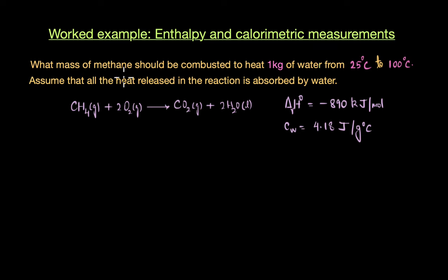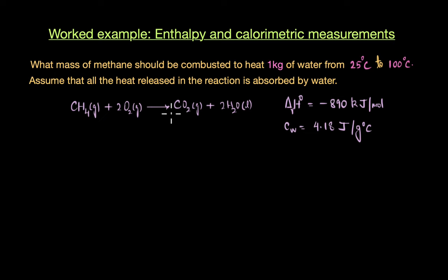Let's look at the first question. What mass of methane should be combusted to heat 1 kg of water from 25°C to 100°C? Assume that all the heat released in this reaction is absorbed by water. The reaction is combustion of methane: CH4 + 2O2 → CO2 + 2H2O. The standard enthalpy change for this reaction is −890 kJ/mol, and the specific heat capacity of water is 4.18 J/g°C.